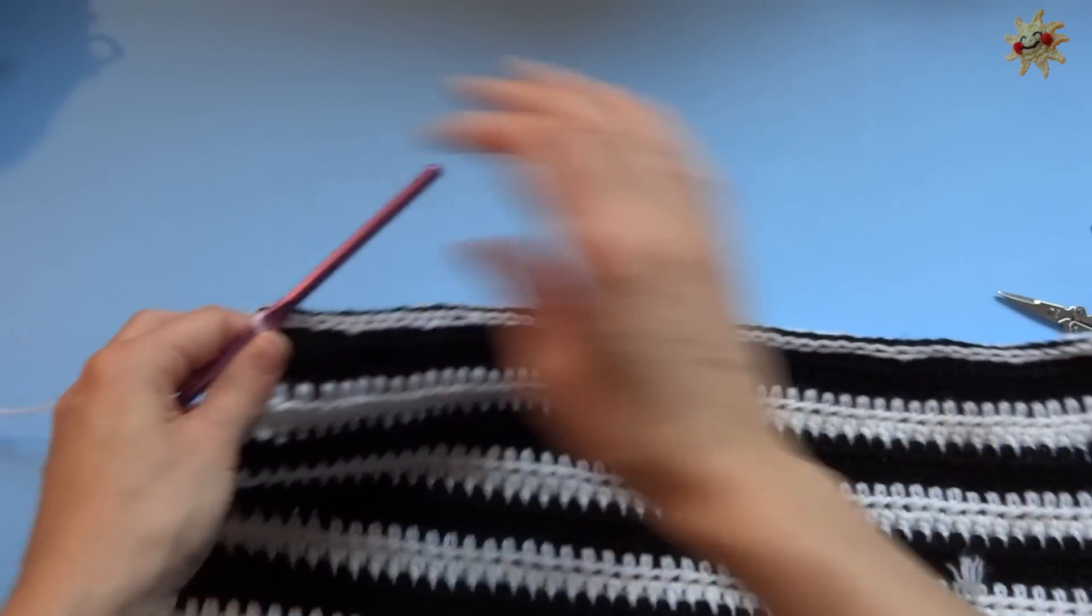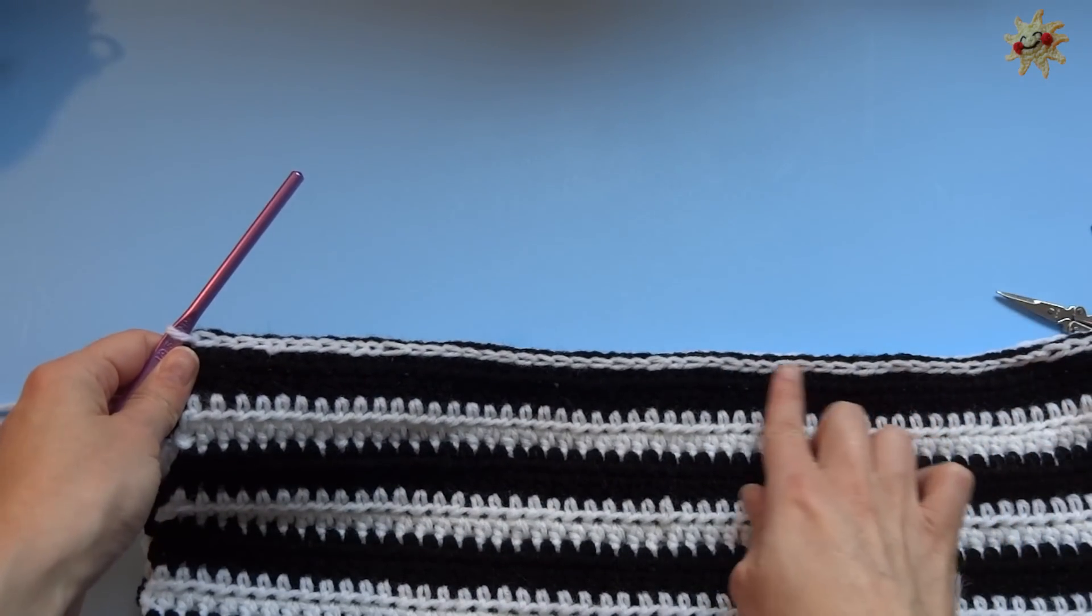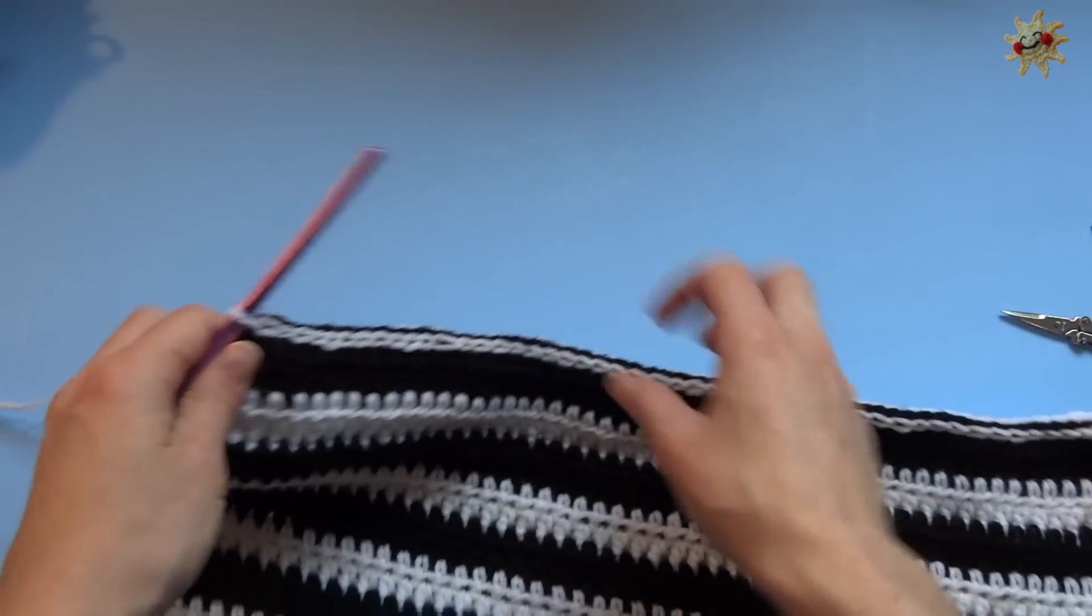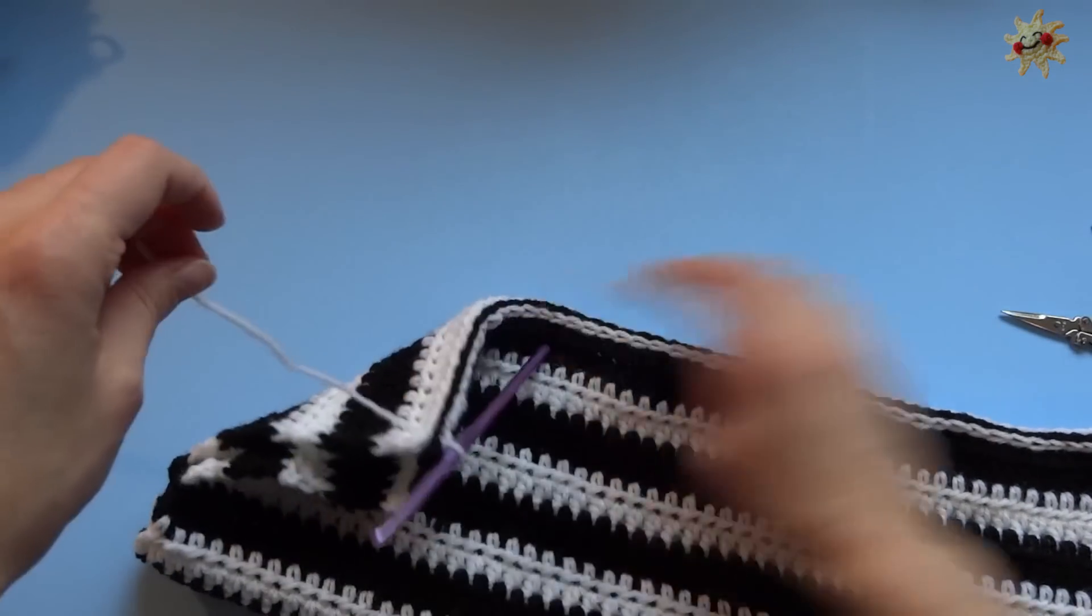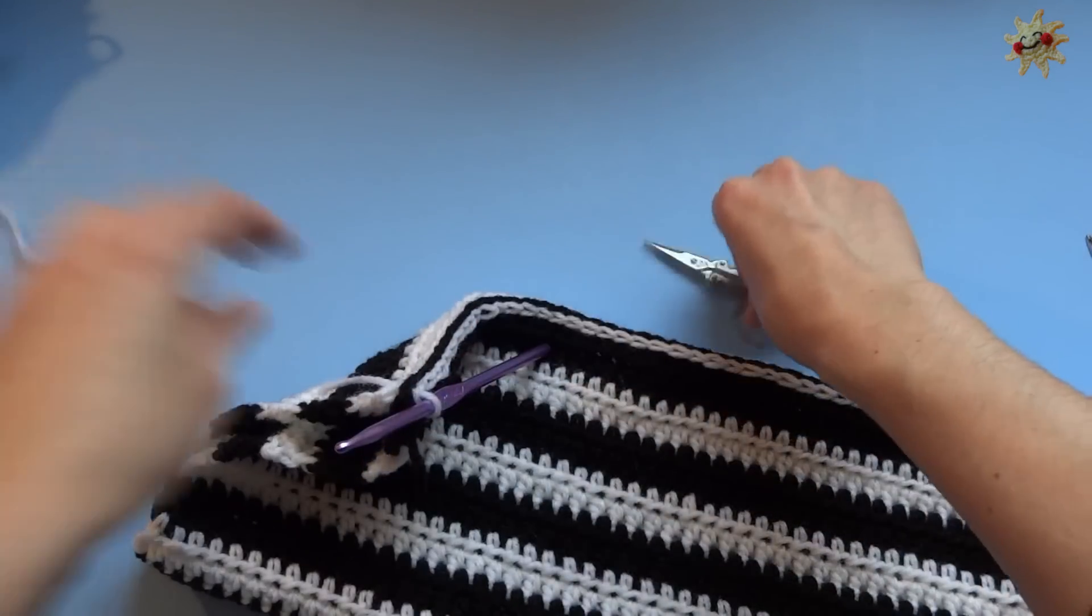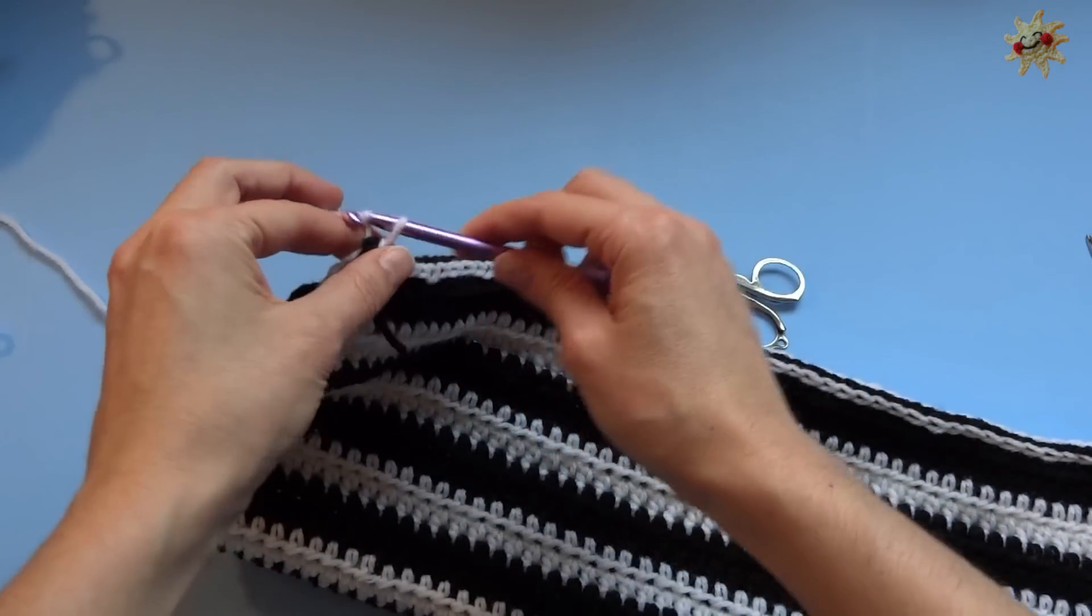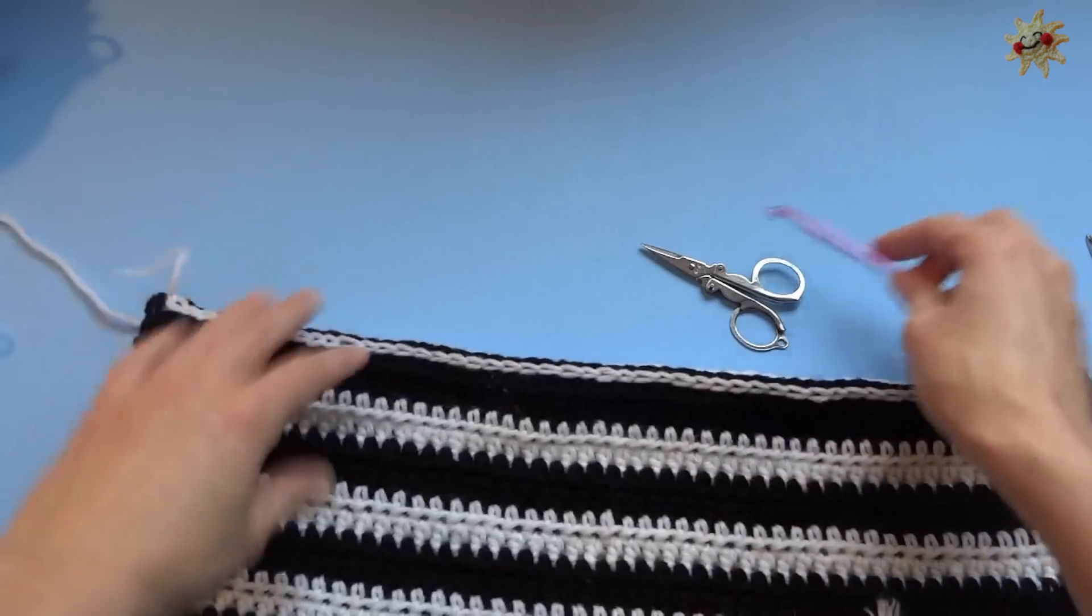And that's working through both sides of the fabric. Now I'm going to snip my yarn. And I'm going to fasten off.